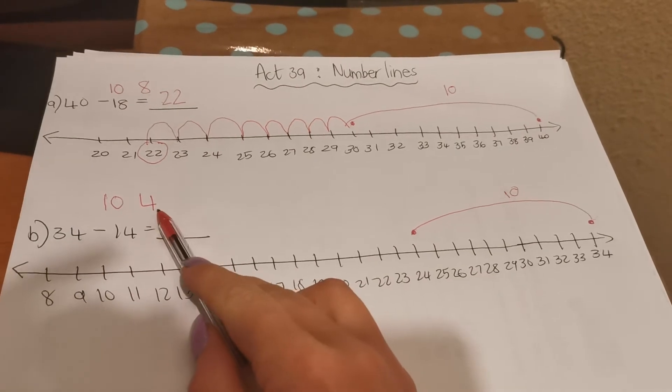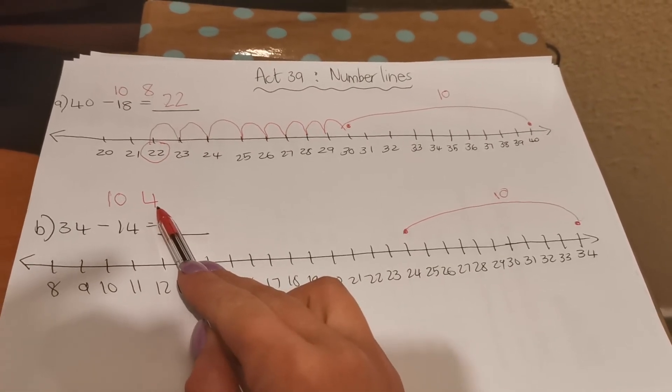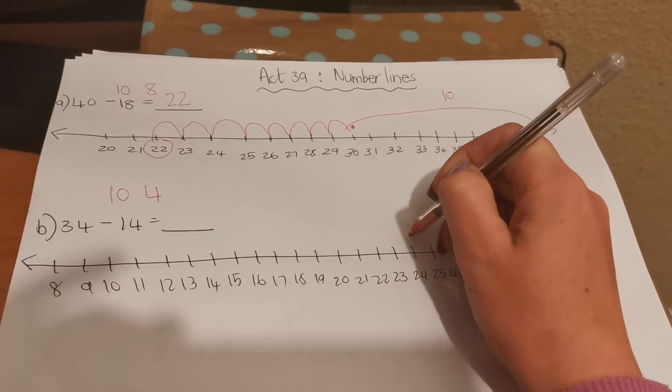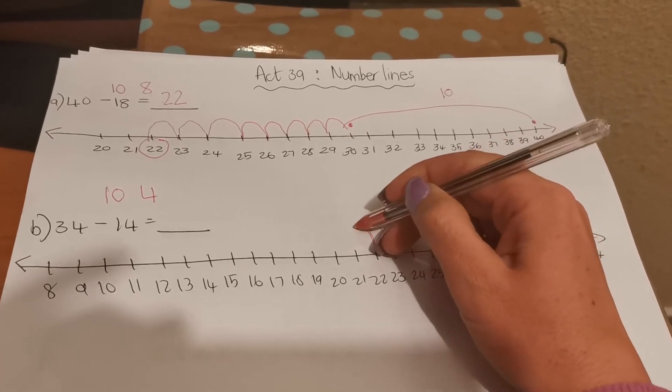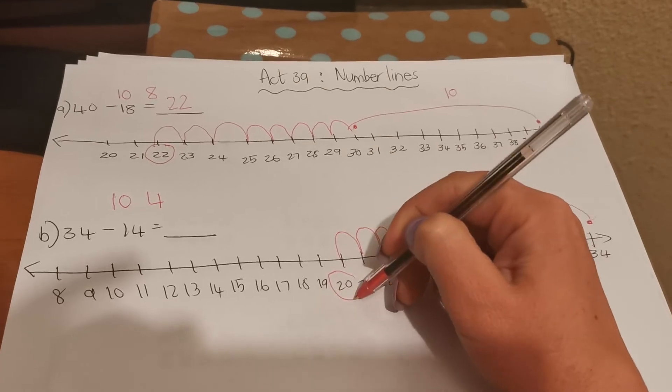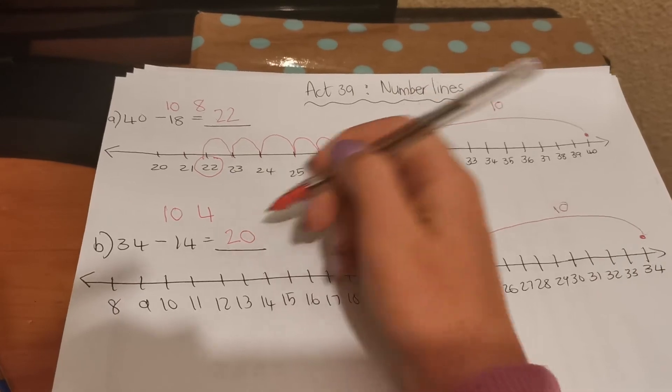Now you need to take away the 4. 4 is units, so you're going to jump backwards in ones. So from 24 you're going to count back 4 times. 1, 2, 3, 4. And you landed on 20. So 34 take away 14 equals 20.